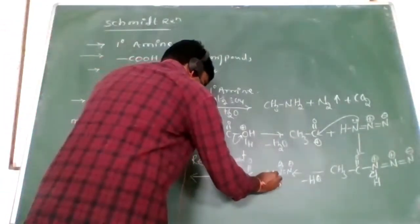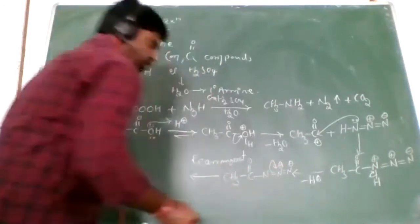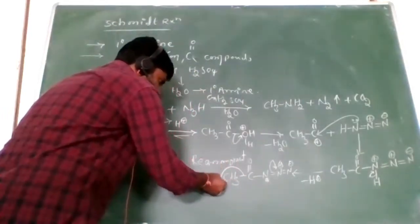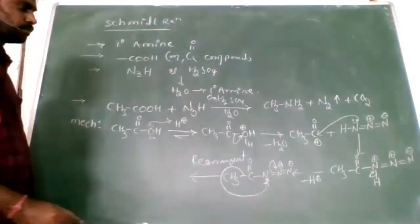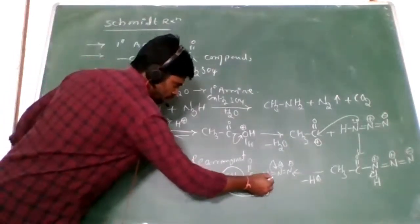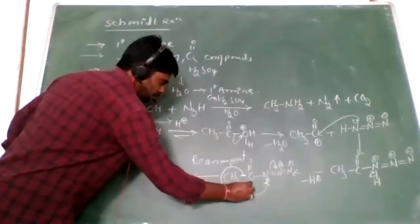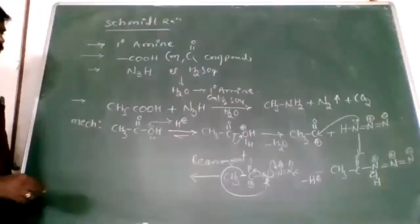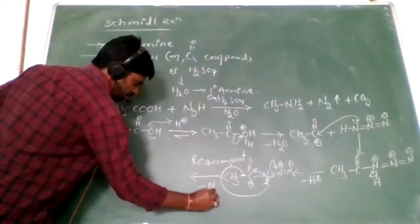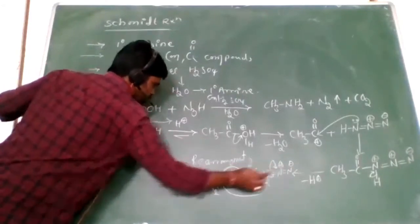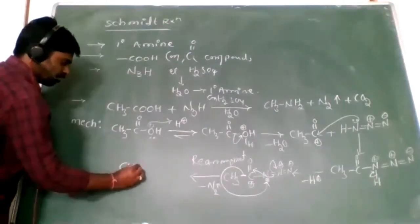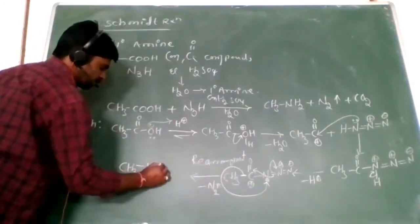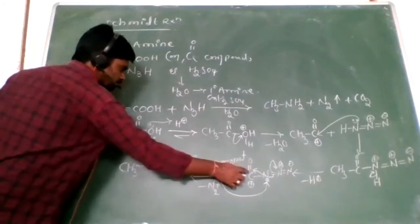In the rearrangement step, electrons shift to the carbon, and nitrogen gets a positive charge. The methyl group takes electrons and moves to nitrogen. Carbon gets positive, electrons shift inside, and nitrogen gas is removed. Finally we get CH₃–N=C=O, where carbon is double-bonded to oxygen — this is an isocyanate intermediate.